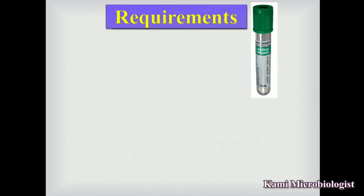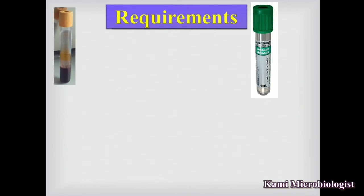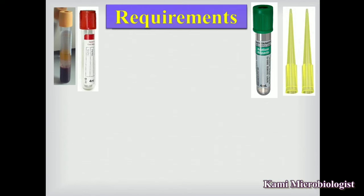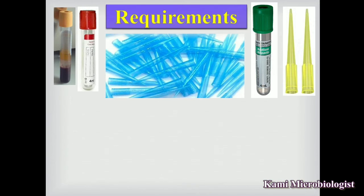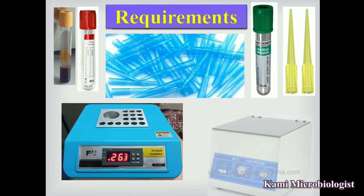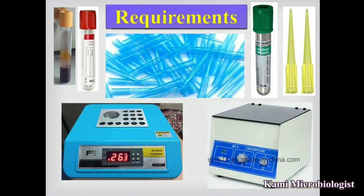Now let's see the requirements. Whenever we are doing this test we need blood in a heparin tube — also called a lithium gel green top or sodium heparin tube — as well as blood in a gel tube red top. We also need yellow tips, blue tips, an incubator, and a centrifuge machine.